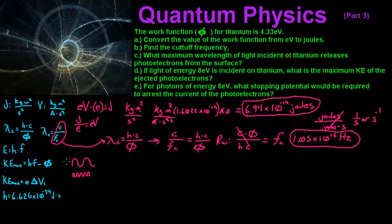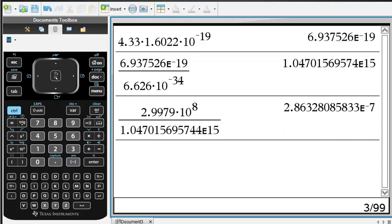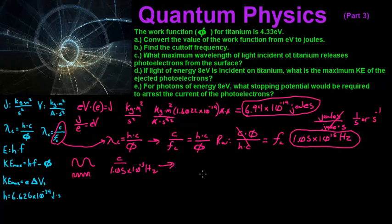If we were talking about minimum wavelength, that would correspond to a much higher frequency and a different equation. We put C divided by our cutoff frequency, which we found to be 1.05 times 10 to the 15th Hertz. Taking C as 2.9979 times 10 to the 8th and dividing by the cutoff frequency gives us the cutoff wavelength: 286 nanometers. So the answer for part C is 286 nanometers.